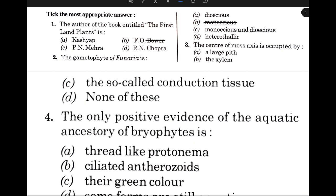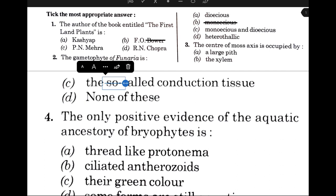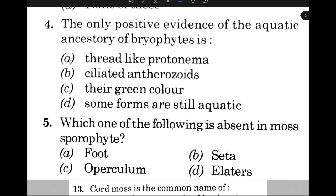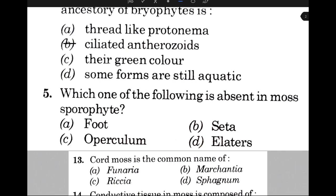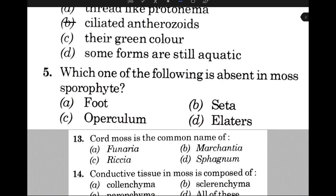The center of moss axis is occupied by — the answer is option C, that is the so-called conduction tissue. The only positive evidence of the aquatic ancestry of bryophytes — the answer is option B. Which one of the following is absent in moss sporophyte? The answer is option D, that is elaters.